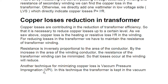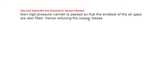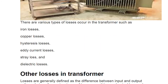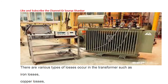Another technique for minimizing copper loss is Vacuum Pressure Impregnation (VPI). In this technique, the transformer is kept in vacuum, then high-pressure varnish is applied so that even the smallest air gaps are filled, reducing copper losses. This is why varnish is used — to fill these air gaps, among other reasons. So there are two methods: increasing conductor area to reduce resistance, and winding varnish application to fill gaps.